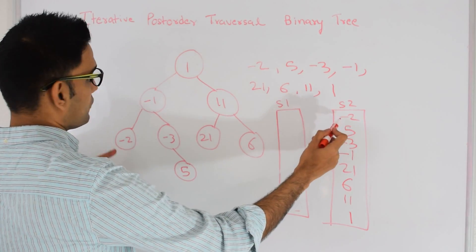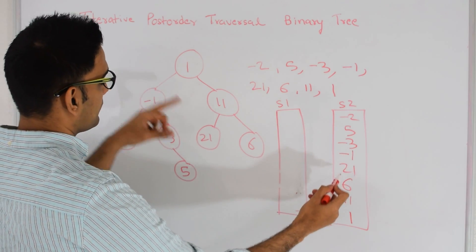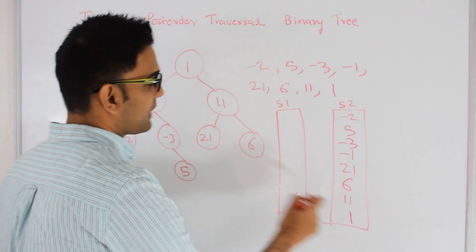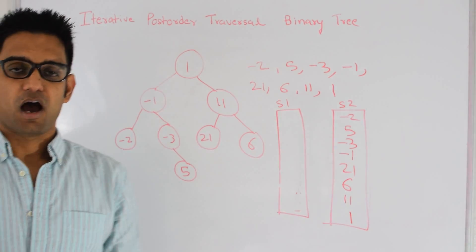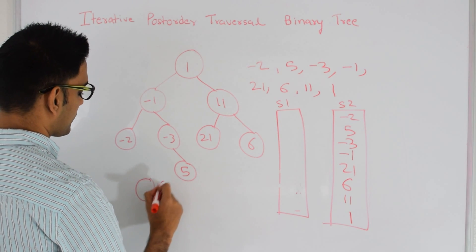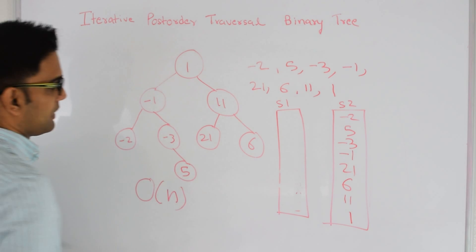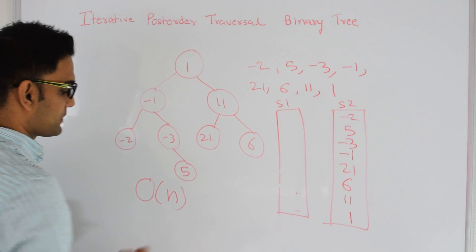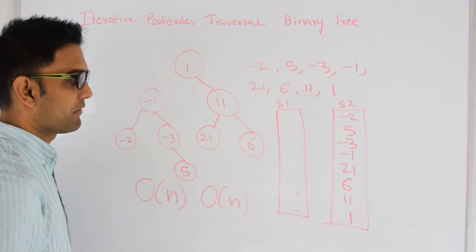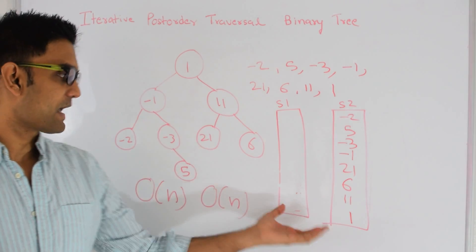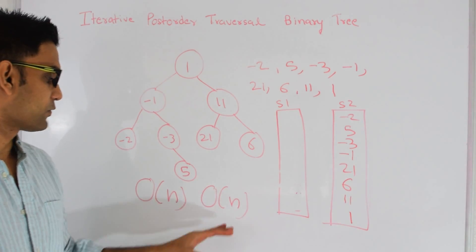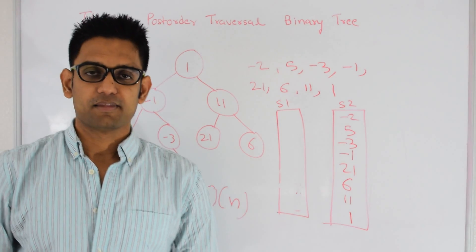Stack 2 is the one which has my final result. When I keep popping from Stack 2 and printing them: -2, 5, -3, -1, 21, 6, 11, and 1. This is my post-order traversal. The time complexity is O(n) because we are visiting every node once. The space complexity is O(n) because Stack 2 will finally hold all the elements, so the worst case is O(n).